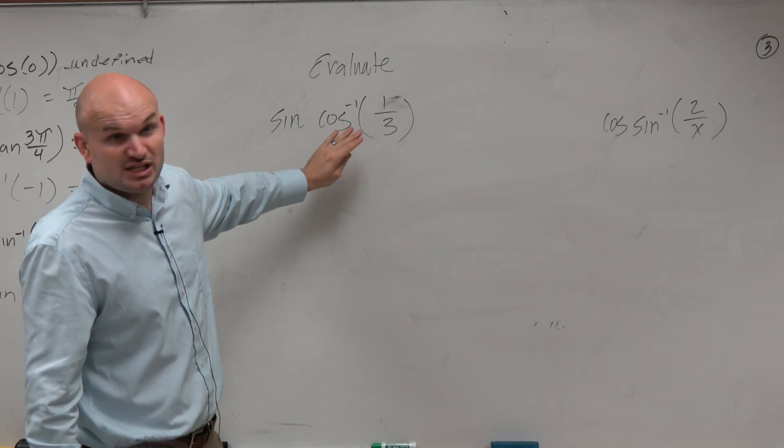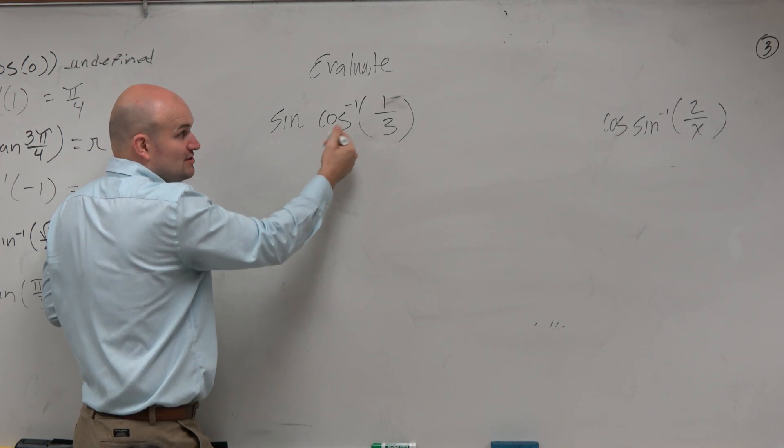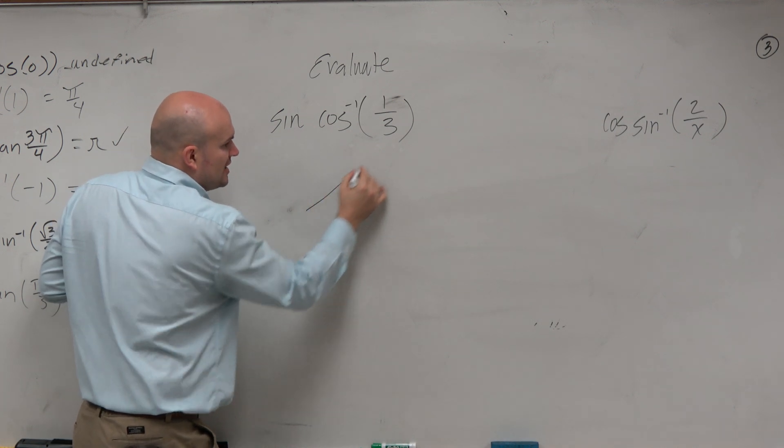This isn't on the unit circle, so let's create a triangle based on this value. If we're trying to do this, we're trying to find some angle. The cosine inverse is going to give us some angle, which we don't know. So let's create a triangle.